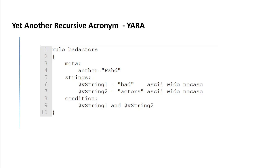Rules are composed of several sections. The meta section is just to identify the rule, like who created it and when. The strings section is where you can define the strings that will be looked for in the file, and strings are used in the condition section.